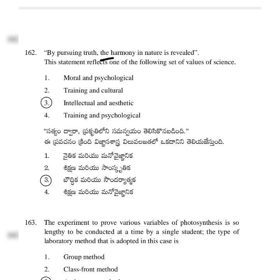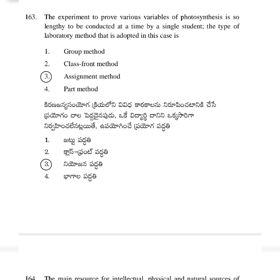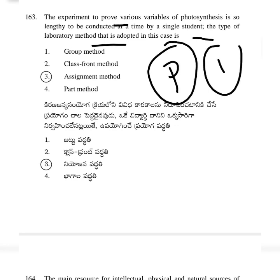One of the following is not true with respect to the functions of facts — option 3: facts cannot influence existing theories. By pursuing truth, the harmony in nature is revealed. This statement reflects — option 3: intellectual and aesthetic values of science. The experiment to prove various variables of photosynthesis is too lengthy to be conducted at one time by a single student. The laboratory method adopted is — option 3: assignment method.